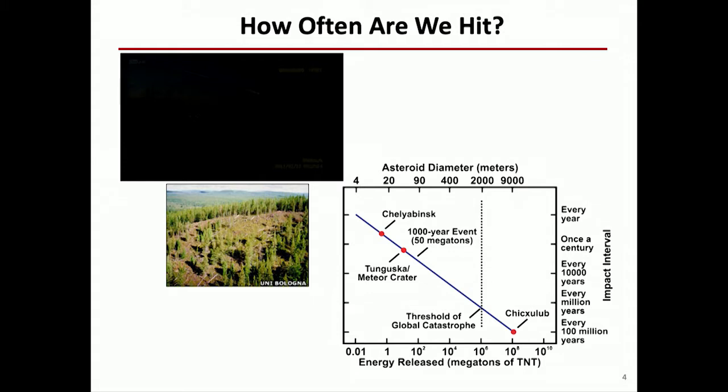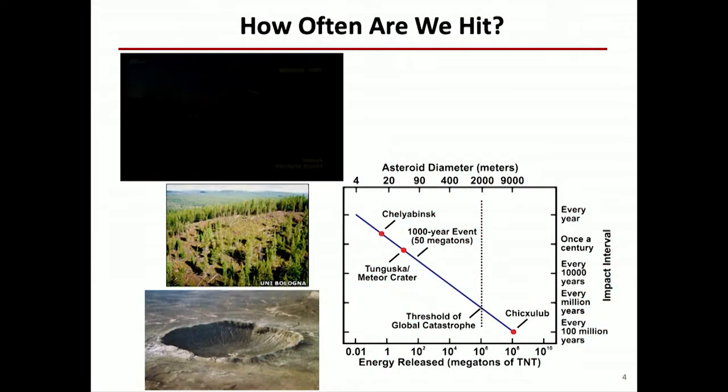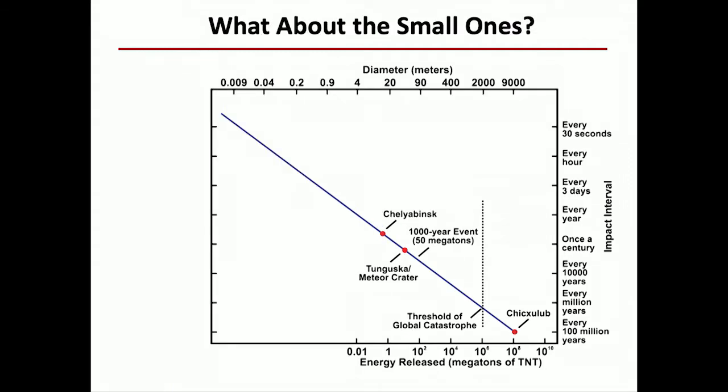There's also the Tunguska event back in the early 1900s, also over Russia, which was about 50 to 150 meters in diameter. And the meteor crater here in Arizona was created about 50,000 years ago by a 50-meter diameter object. As you can see, when we populate this plot, the bigger the object, the less likely it is to impact. If you extend that down to the right, you see Chicxulub, the dinosaur extinction event about 65 million years ago. But what about if we extend that to the upper left and look at all those little particles that everyone ignores? Something that's about 0.009 meters in diameter occurs about every 30 seconds.